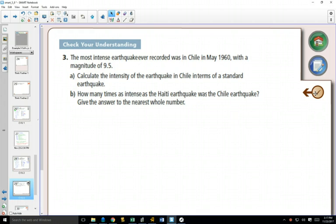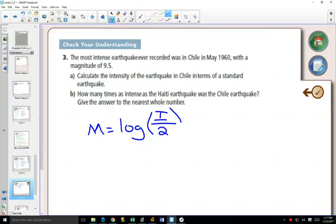The most intense earthquake recorded was in Chile, with a magnitude of 9.5. Let's calculate the intensity in terms of a standard earthquake. Here's our formula, M = log(I/S), and we know the magnitude is 9.5. The question asks us to calculate the intensity, so we want to get this capital I by itself.